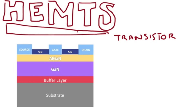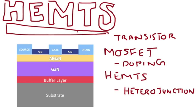So we apply a voltage at the gate, and in MOSFETs, doping within the material controls this current flow. However, in HEMTs, doping is not the main control of this current flow. Instead, it's what we call a heterojunction.